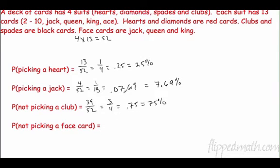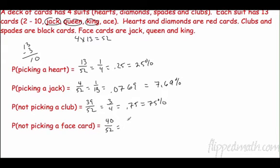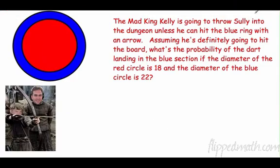What's the probability of not picking a face card? Each suit has three face cards — jack, queen, king — so there are 12 face cards total. That leaves 10 non-face cards per suit, or 40 out of 52, which reduces to 10 over 13 — that's 0.7692, or 76.92%.